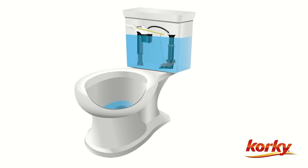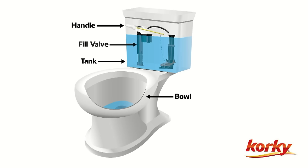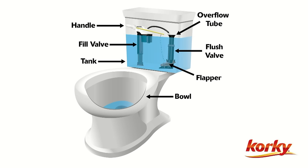This is a quick overview of how a toilet works. First, let's go over the different parts of the toilet: the handle, tank, bowl, fill valve, flush valve, overflow tube, and flapper.